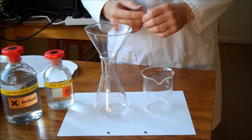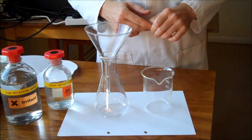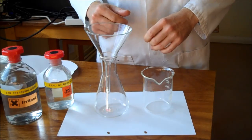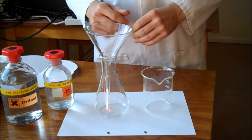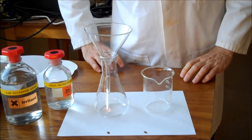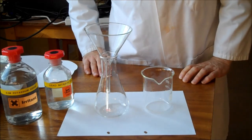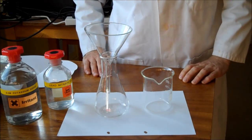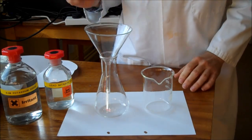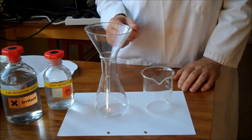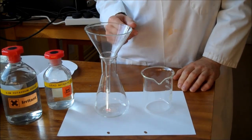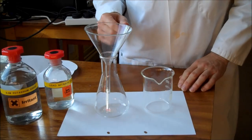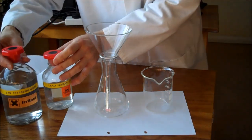In this video we're looking at making an insoluble salt by a process called precipitation. In everyday life precipitation means hail, snow, rain, sleet, drizzle, but in chemistry it's got a more precise meaning. It means when you make an insoluble solid from a solution or from two solutions.